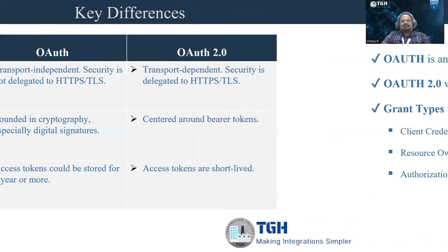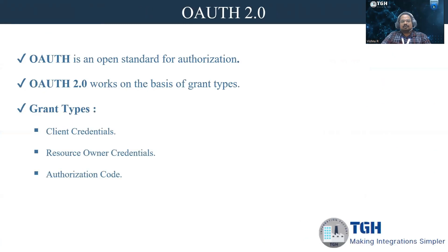OAuth 2.0 is an open standard for authorization, and it works on the basis of grant types. We have three grant types available in Boomi: client credentials, resource owner credentials, and authorization code.